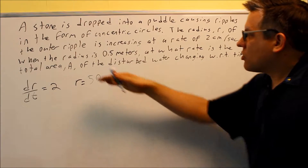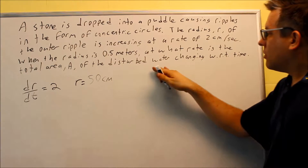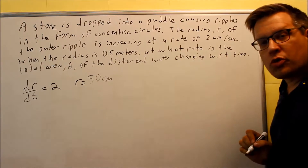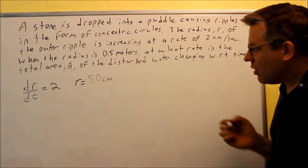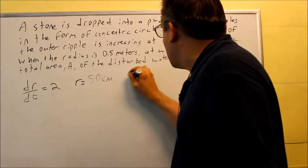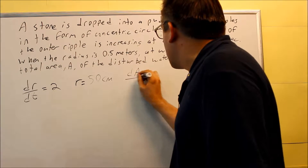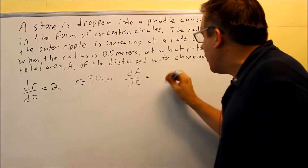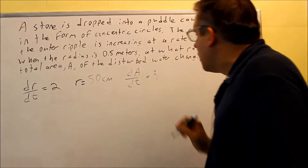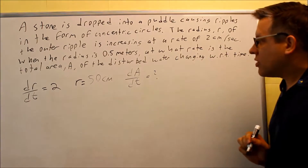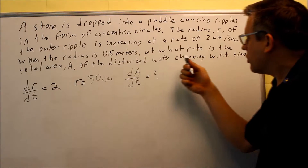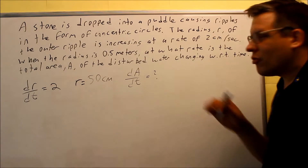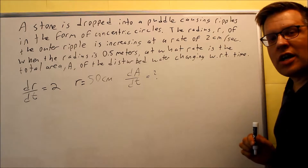At what rate is the total area changing with respect to time? That is what they're asking us to find — that's going to be dA/dt, the rate at which the area of the water is changing with respect to time. So this is the information that's been provided.